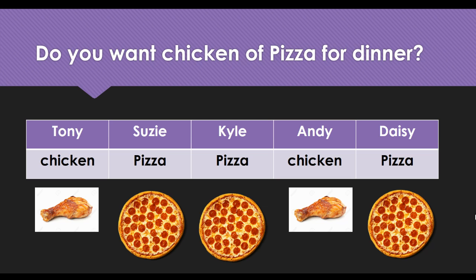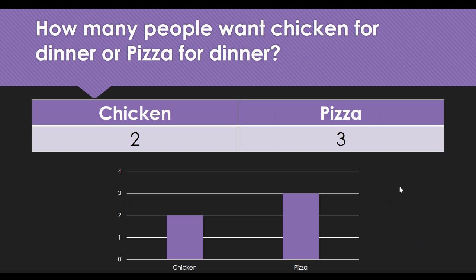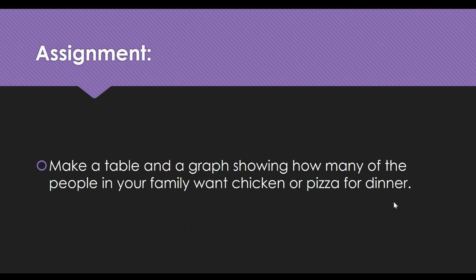How many does chicken have? Two — only two. And pizza has three, so pizza has more. Here is a graph showing that chicken has two and pizza has three. Three people want to eat pizza for dinner, so I guess pizza it is for dinner!